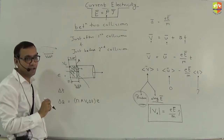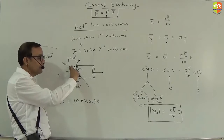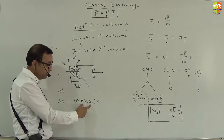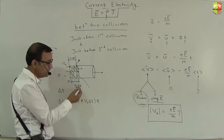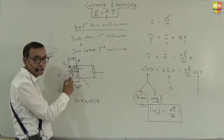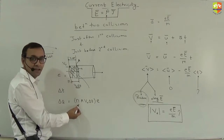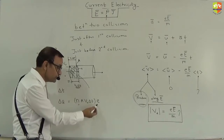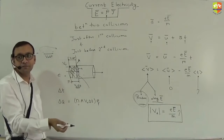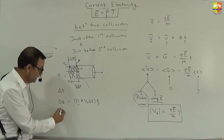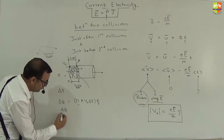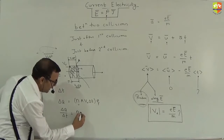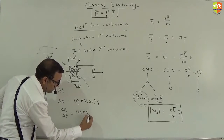The volume of this zone is A × v_d × δt. Multiply by n (free electrons per unit volume) and by charge e to get total charge. So in one second, current I = ΔQ/δt = n × e × A × v_d.